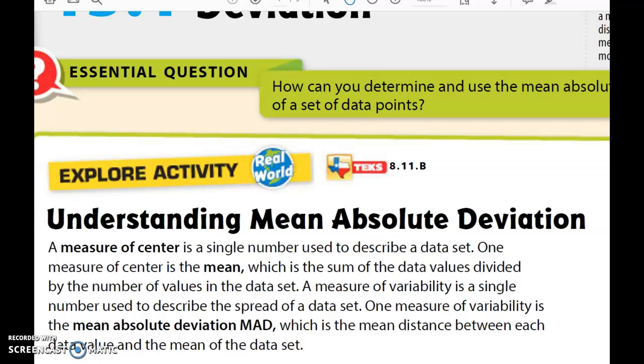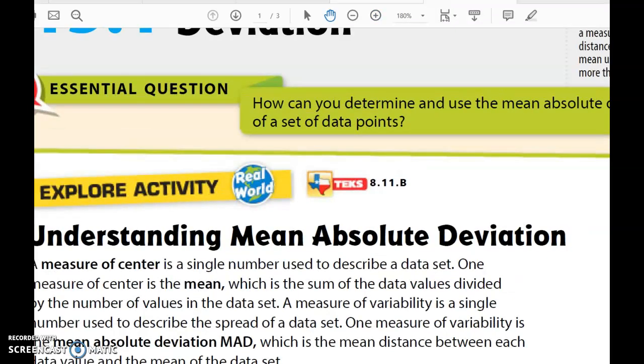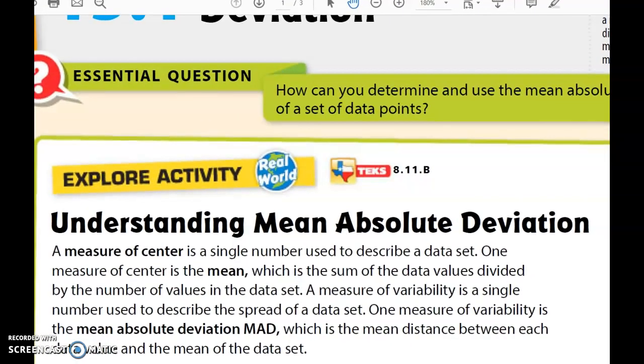The measure of variability, or one measure of variability, is going to be the mean absolute deviation, also known as the acronym MAD, which is going to be the mean distance between each data value and the mean of the data set. You might ask yourself, what does that mean? I'm going to go ahead and show you exactly what it means, and that would be 8.11b. Now, 8.11b indicates that we're going to find the measure of the average distance from a mean using a data set of no more than 10 data points, and that's exactly what we're going to do right now.